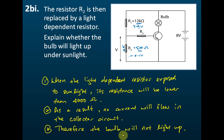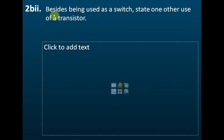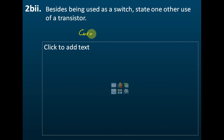That is how we present our answer. Besides being used as a switch, there is one other use of a transistor — the transistor can also be used as a current amplifier. So there are two uses of a transistor: as a current amplifier and as an automatic switch.